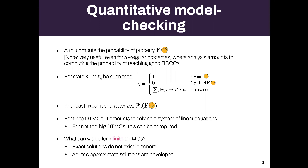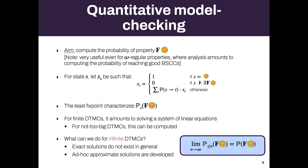This is useful for finite Markov chains — it amounts to solving a system of linear equations. But what happens for infinite Markov chains? We need to handle denumerable Markov chains. In general, exact solutions do not exist or cannot be computed. An ad hoc approximate solution needs to be developed. We use a key property: the probability of reaching some state equals the limit of the probability to reach that state in at most n steps.